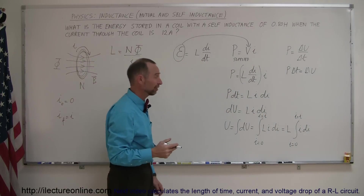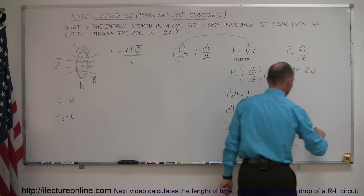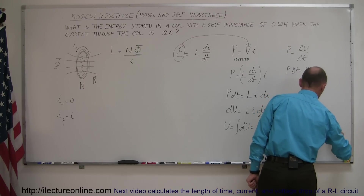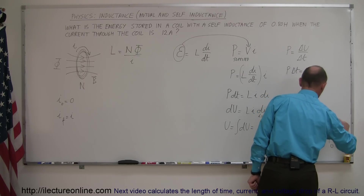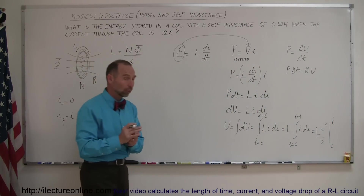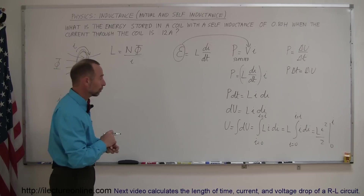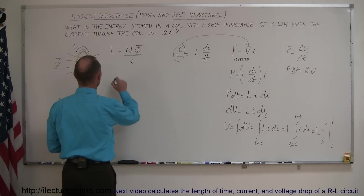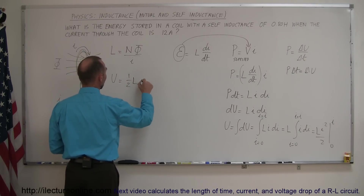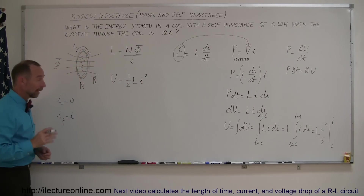The integral of I DI is simply I squared over 2, so this is equal to L times I squared over 2, evaluated from zero to I. That means the energy stored in an inductor is simply equal to LI² over 2, or we can write: energy U equals one-half times the self-inductance times I squared.